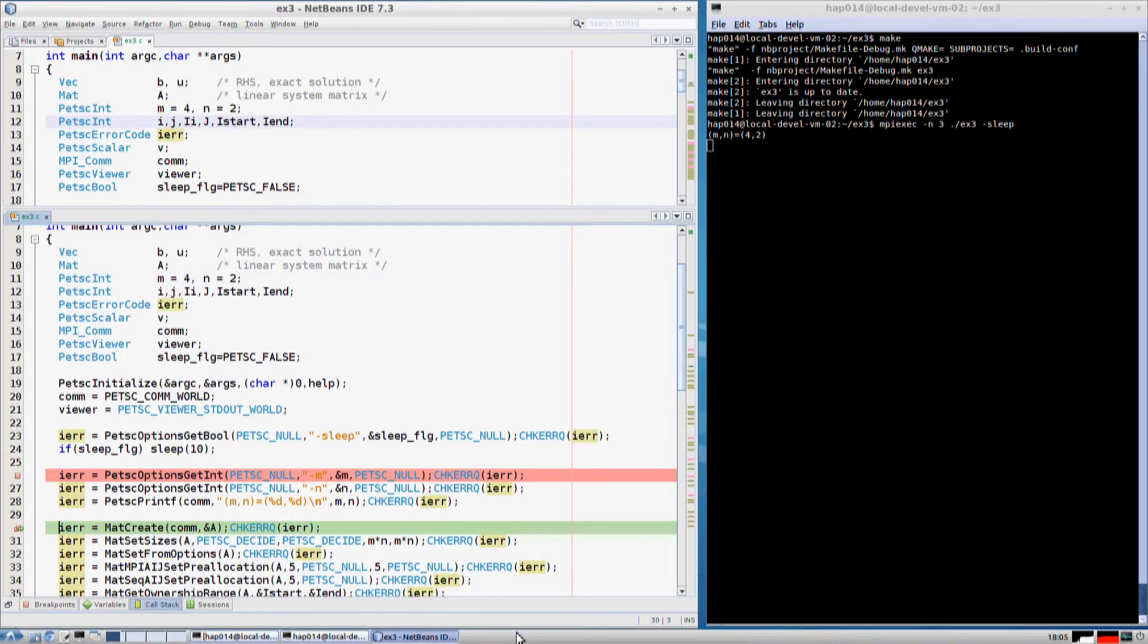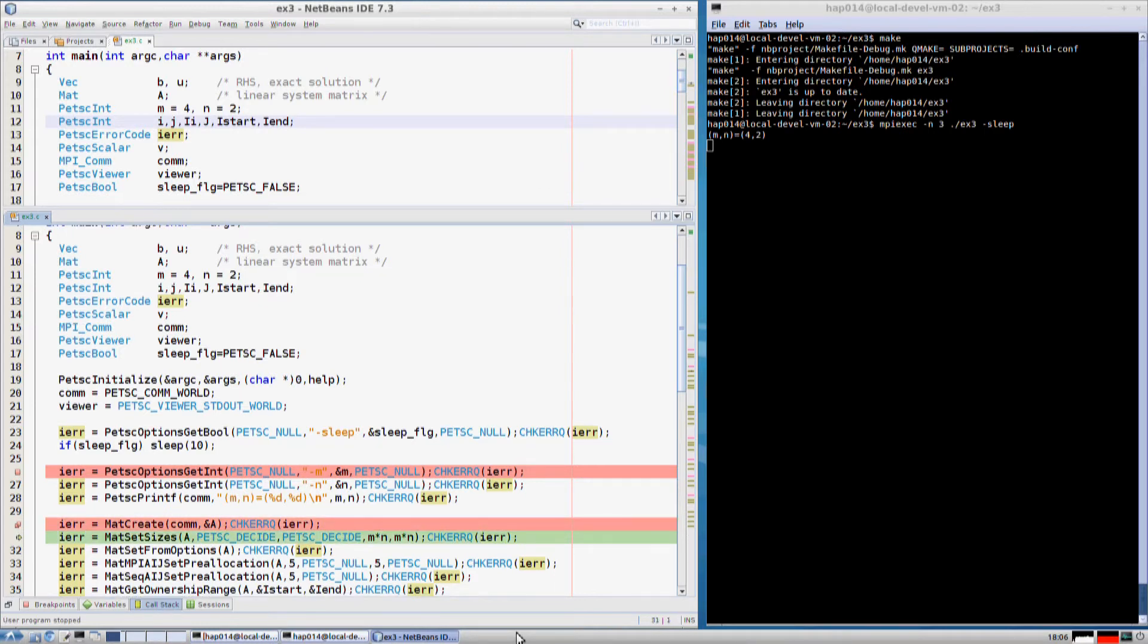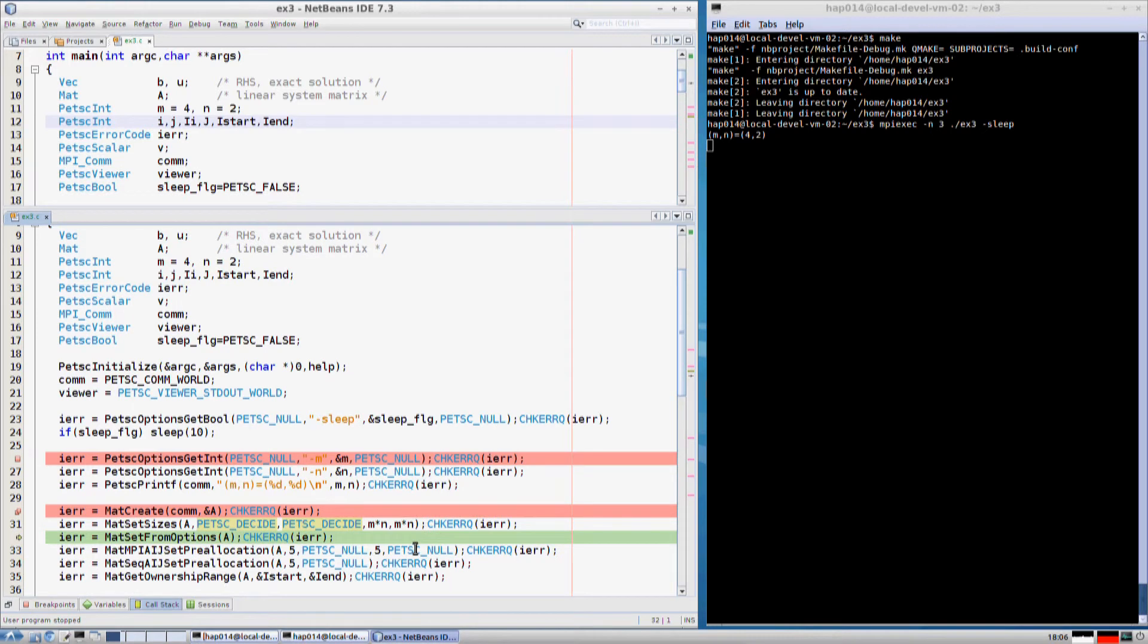Now let's assemble a system matrix. The situation is quite analogous to vectors. We first call MatCreate to create a new matrix object A, set the local and global sizes where the local size computed automatically, and set the matrix properties from command line options. The default matrix type is for parallel case MPIAIJ which stands for distributed sparse CRS format, and for sequential case SEQAIJ which is sequential sparse CRS.